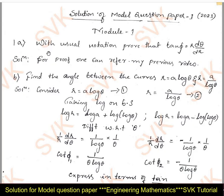Question number 1a: with usual notation, prove that tan φ = r dθ/dr. The solution has been proved in the previous video; you can refer to the previous video for this proof. I have provided the link in the description.